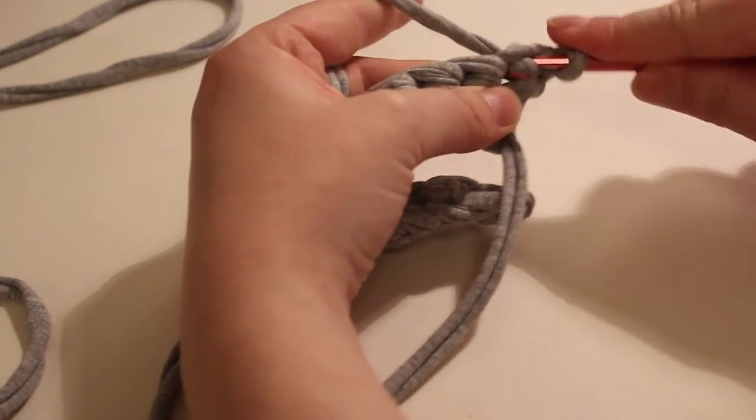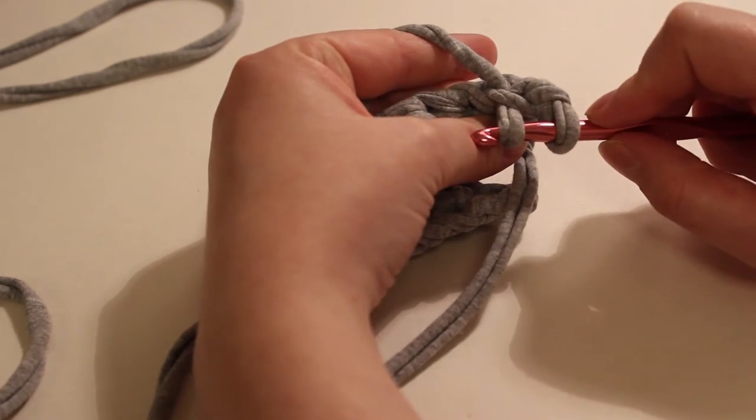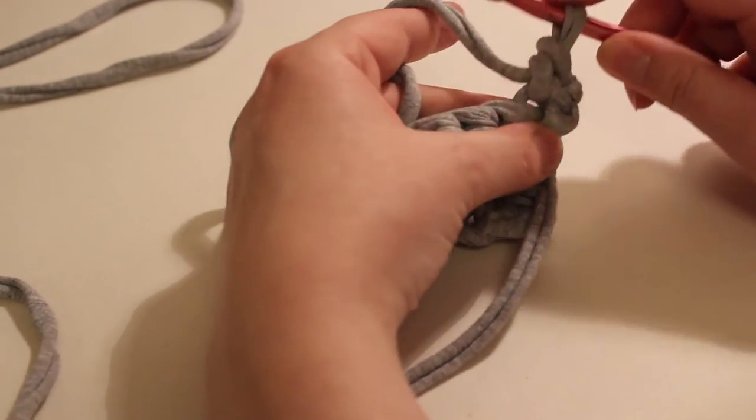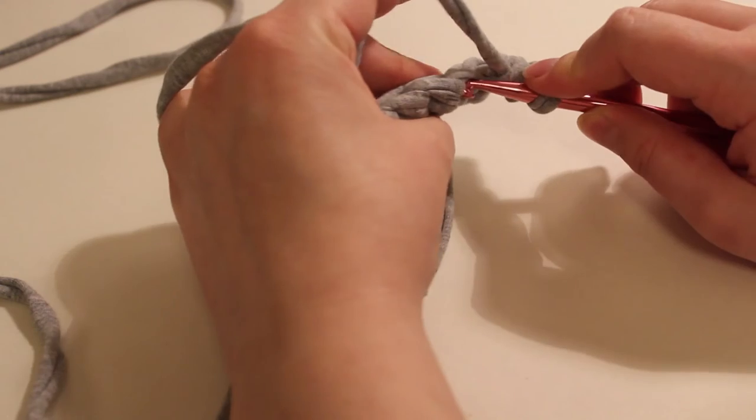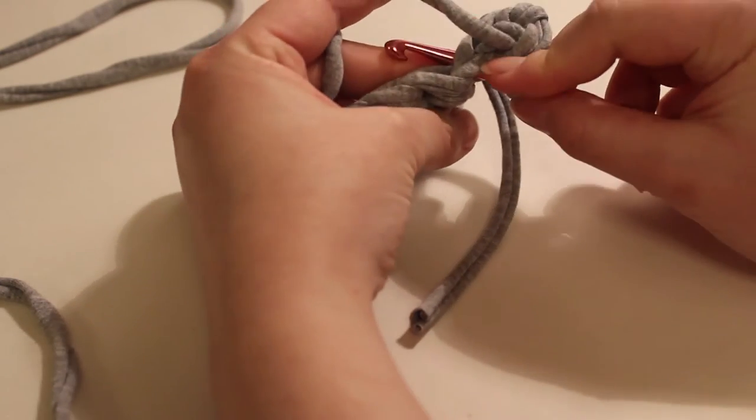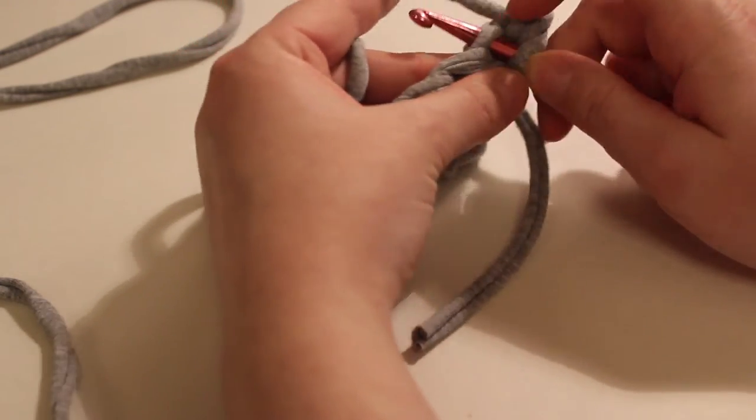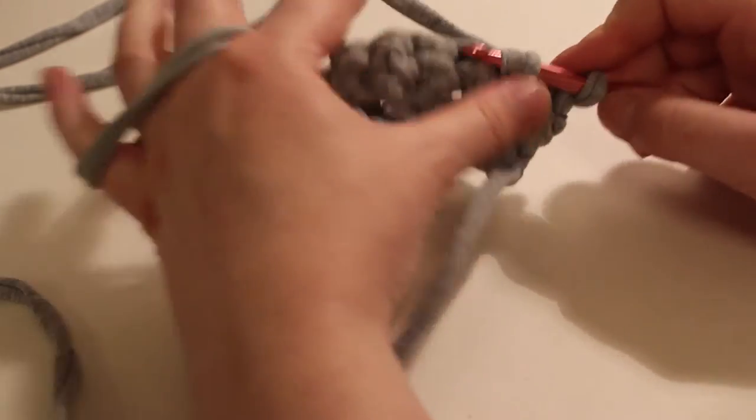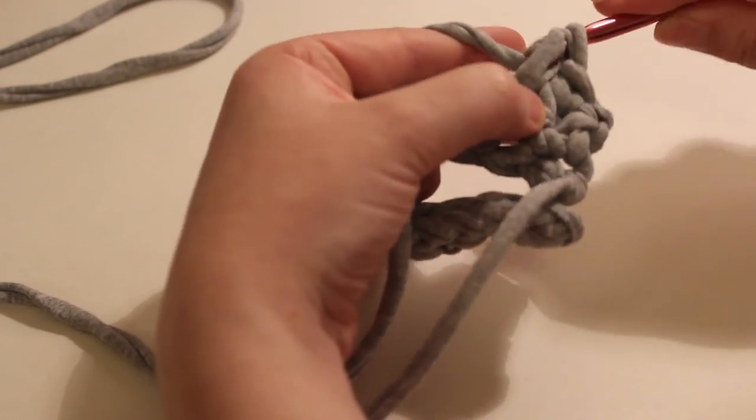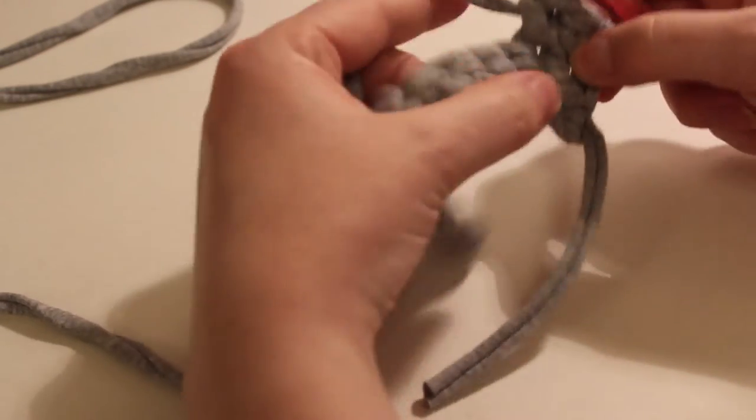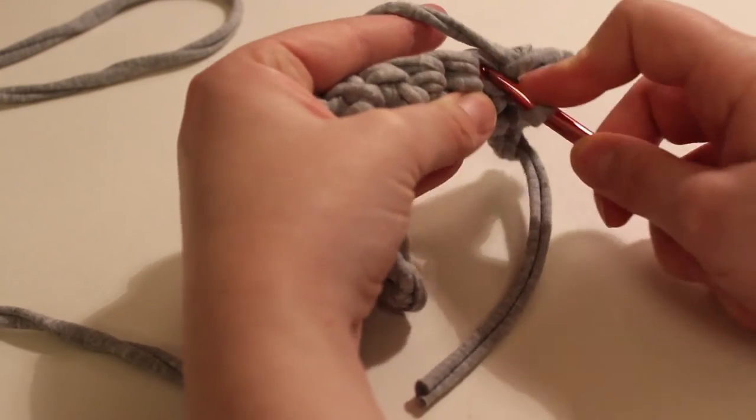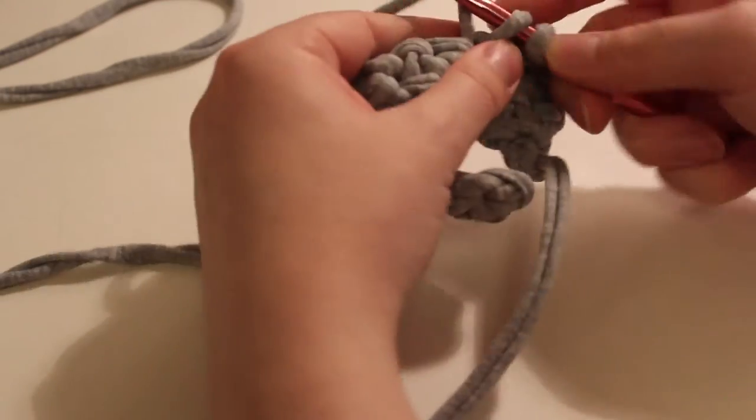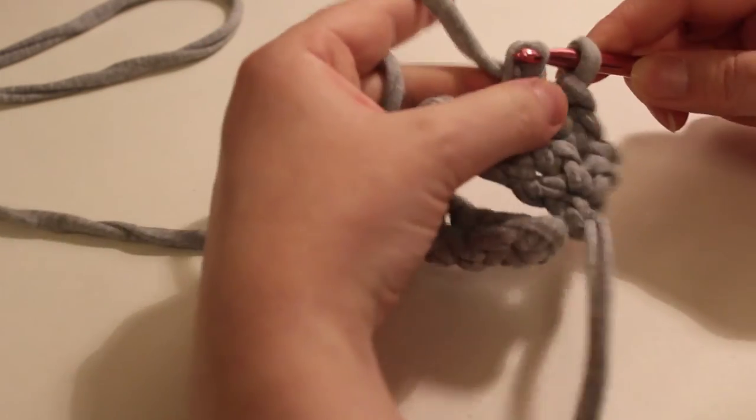So this one, then I'm pulling my yarn through, and then yarning over and pulling through both of those loops. So you're not just going to punch in through both of these; you're just going to go into the first part of the stitch here, pull up a loop, yarn over, go through two. You go in through the stitch, yarn over, pull up a loop, yarn over, and go through two.